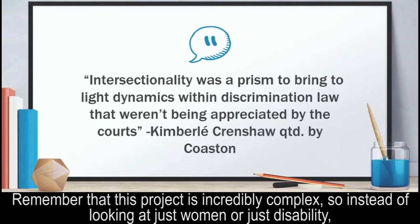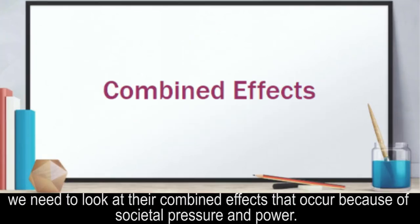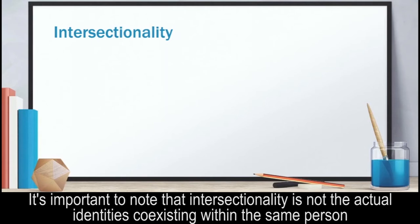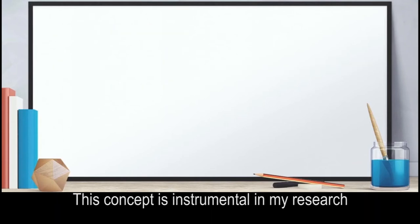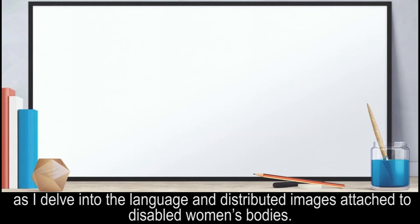Remember that this project is incredibly complex, so instead of looking at just women or just disability, we need to look at their combined effects that occur because of societal pressure and power. It's important to note that intersectionality is not the actual identities coexisting within the same person, but the discrimination that comes from this intersection. This concept is instrumental in my research as I delve into the language and images attached to disabled women's bodies.